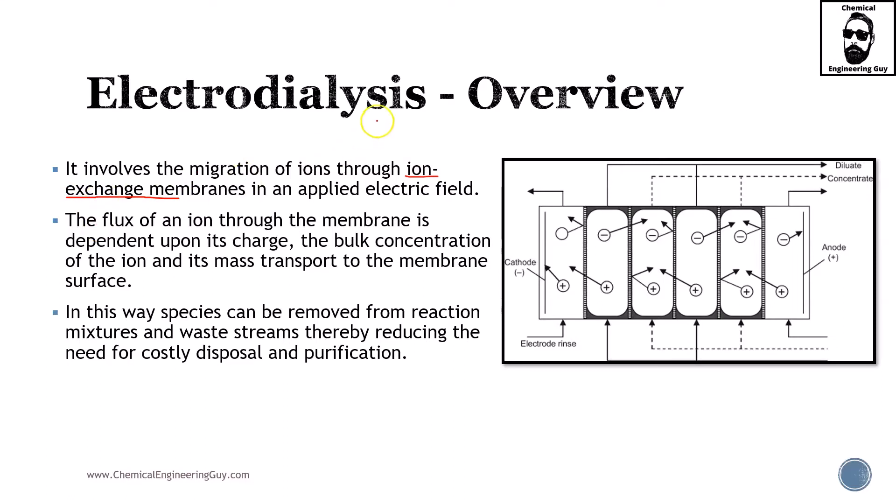Remember the anode and the cathodes—the negative and positive charges are going to be moving accordingly. The flux of an ion through the membrane is dependent upon its charge, the bulk concentration of the ion, and its mass transport to the membrane surface. In this way, species can be removed from reaction mixtures and waste streams, thereby reducing the need for costly disposal and purification.